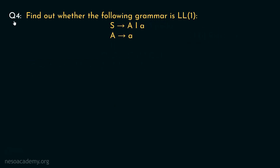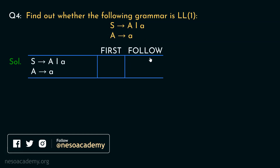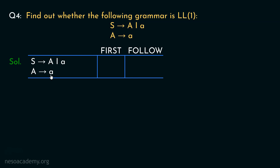Let's now move on to the next question: determine whether the given grammar is LL1. There are two non-terminals involved. For A, the production rule A → small a gives FIRST(A) = {a}. For the start symbol S, which is involved in two production rules: FIRST(A) contains a, and S can also directly generate small a, so FIRST(S) = {a}.